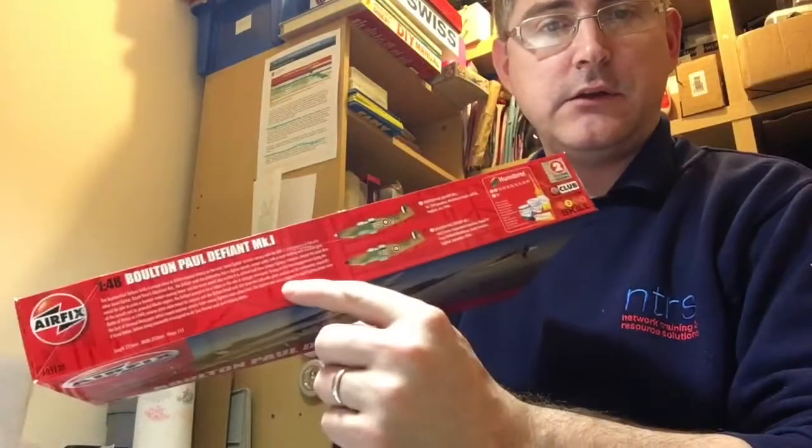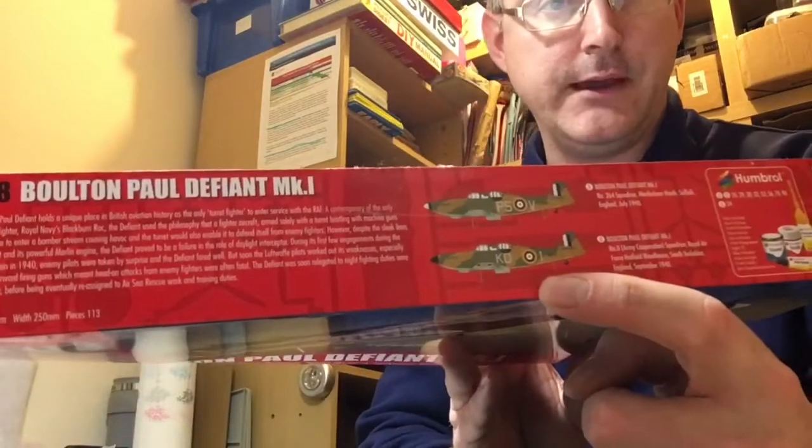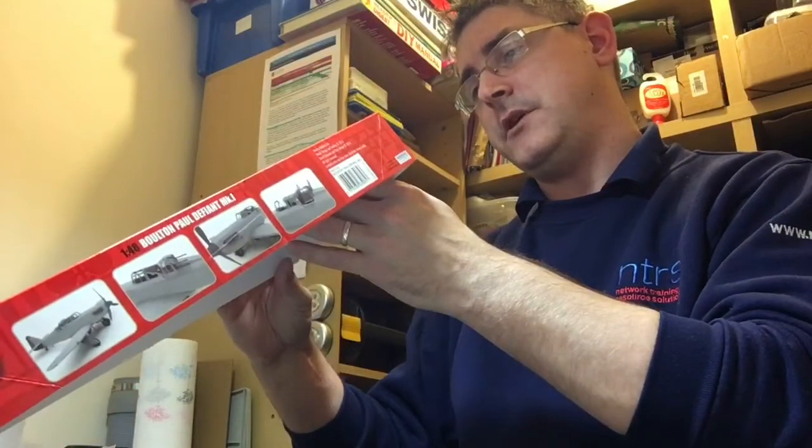All I've done so far with this kit is open it, have a quick glance through the instructions, and cut the end off the bags. Normal sturdy Airfix box. On the side we've got a bit of spiel about the Defiant Mark One, and there's two marking options: Number 264 Squadron, Mileham Heath, Suffolk, England, July 1940, and Number 11 Army Cooperation Squadron, RAF Hatfield Woodhouse, South Yorkshire. Hatfield Woodhouse is in Sheffield, just down the road from me, so that's the scheme I'm going for. I picked this kit up off eBay for about 18 pounds 50 delivered.